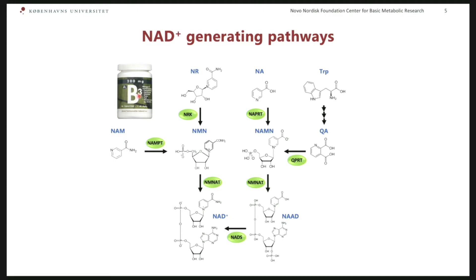NAD can also be generated de novo from tryptophan, which merges with the Preiss-Handler pathway. The enzymatic reactions highlighted here all break down NAD to nicotinamide. Because nicotinamide inhibits the activity of these enzymes, we think that NAD plays an important role in relieving this potential inhibition of those important enzymatic reactions.